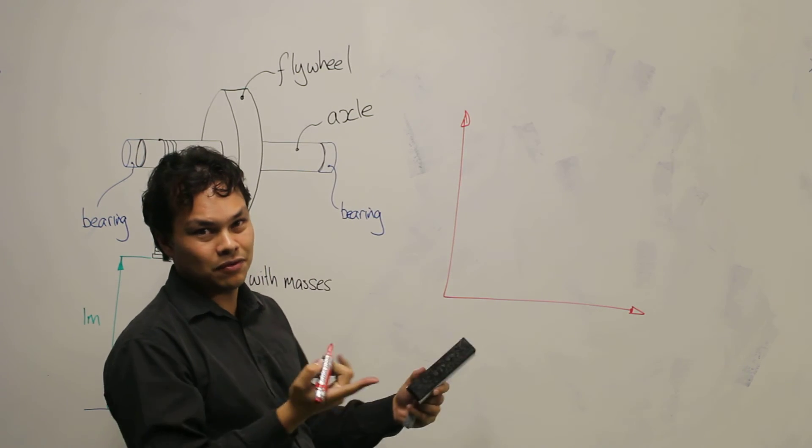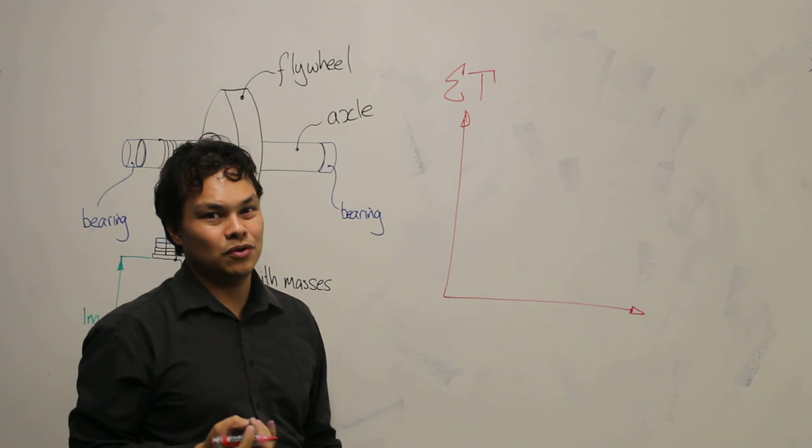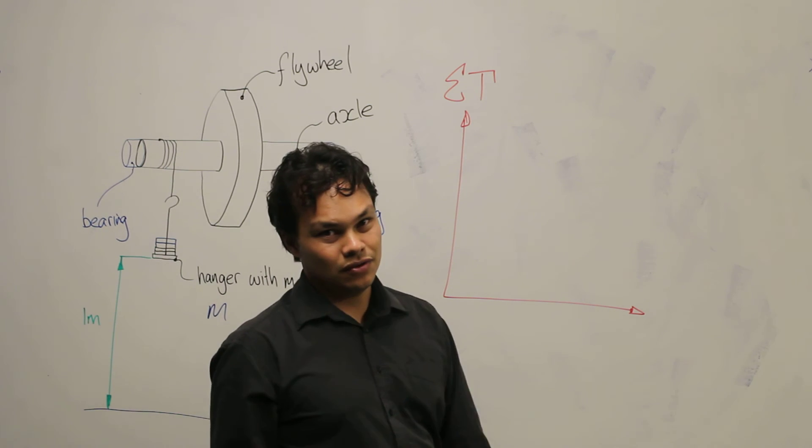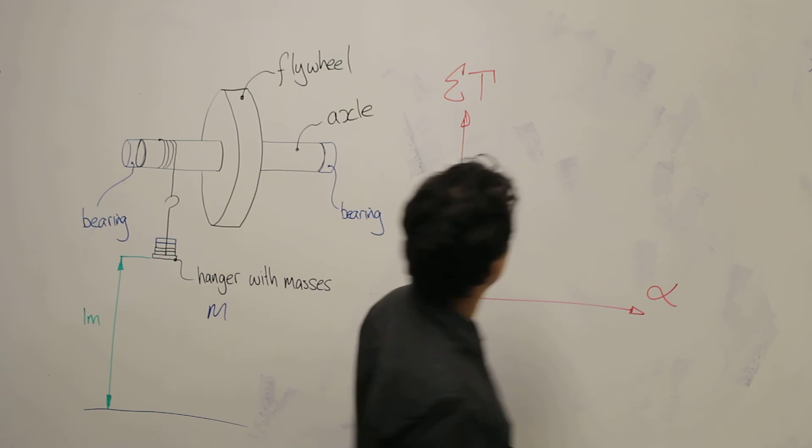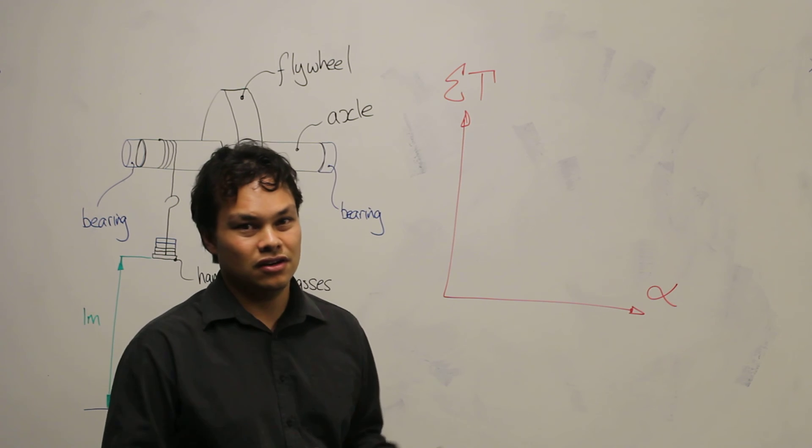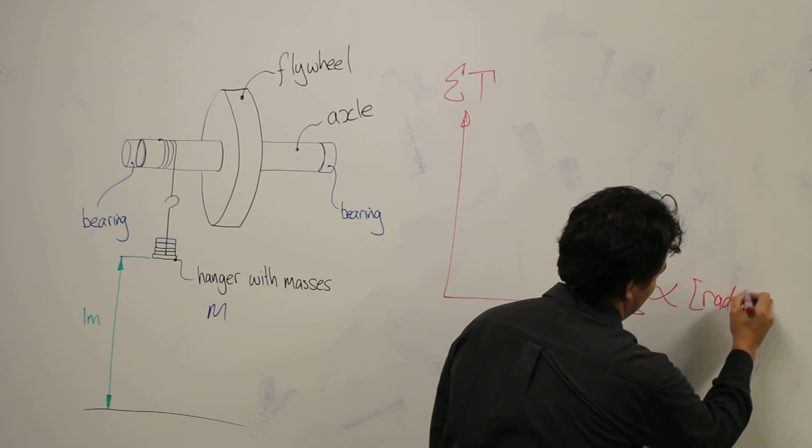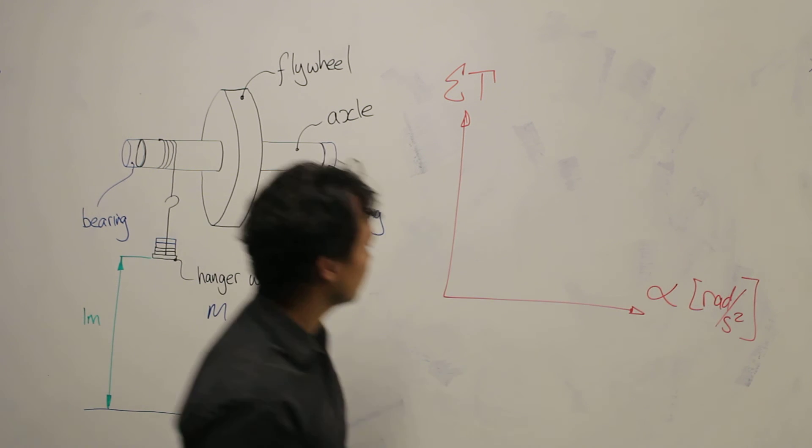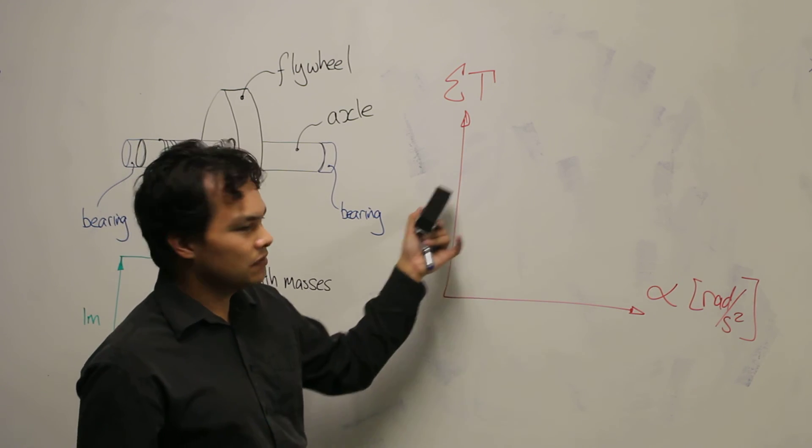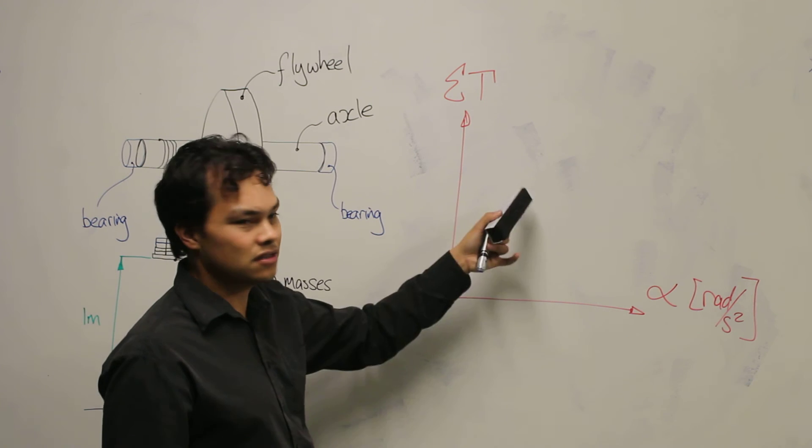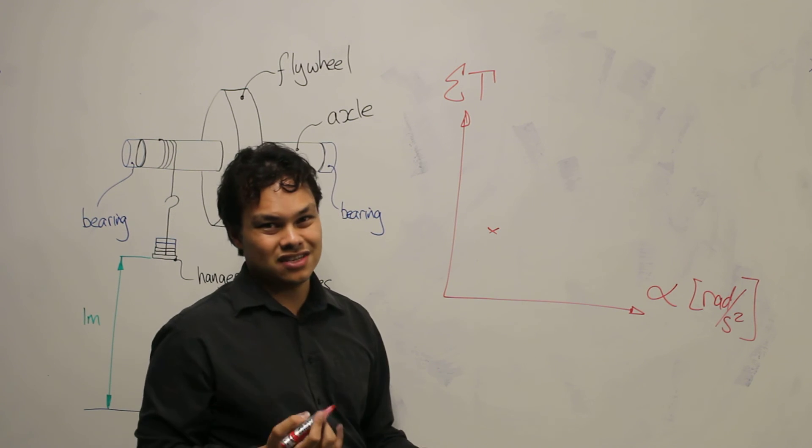You'll have your sum of torque which you've calculated from your mass. You'll have your angular acceleration measured in radians per second squared. And you'll be able to plot your value of sum of torque against a certain value of angular acceleration. I recommend that you use Excel for this.